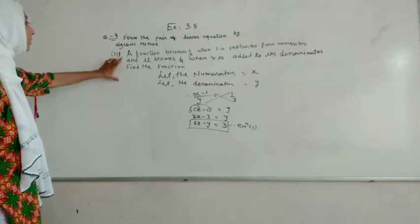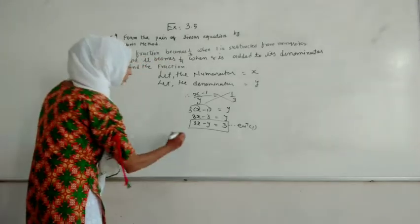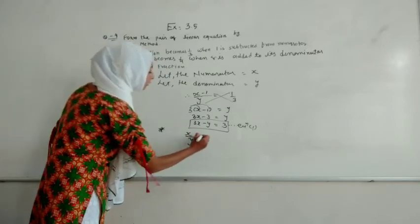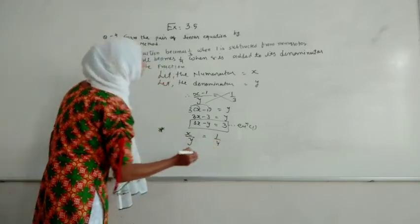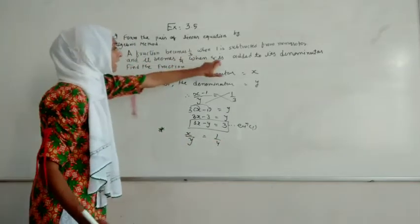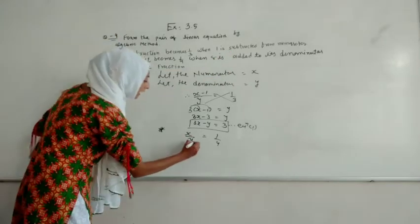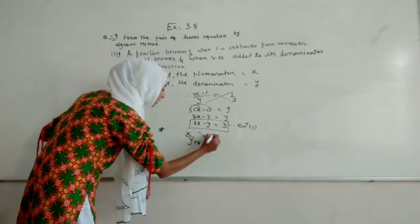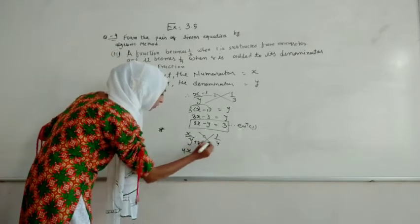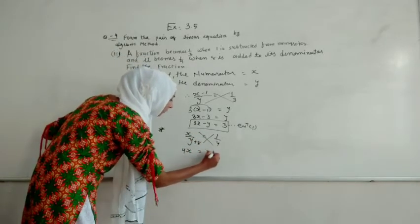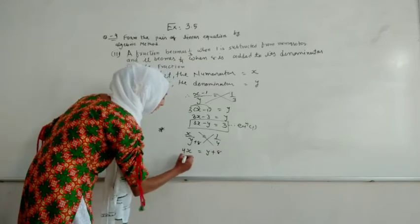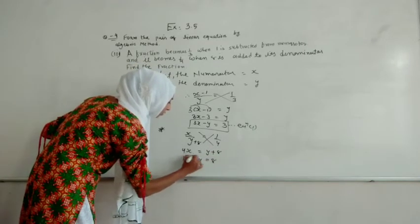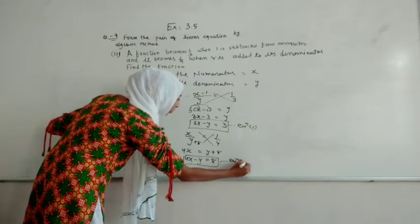For the second equation, the fraction X upon Y becomes 1 upon 4 when 8 is added to the denominator. So it becomes X upon (Y plus 8) equals 1 upon 4. Doing cross multiplication: 4X equals Y plus 8, so 4X minus Y equals 8. That is equation number 2.